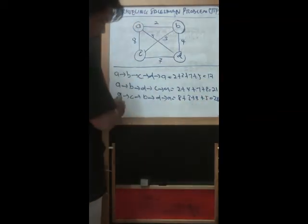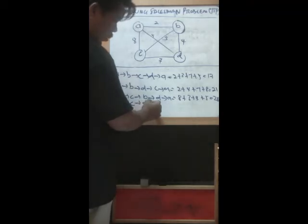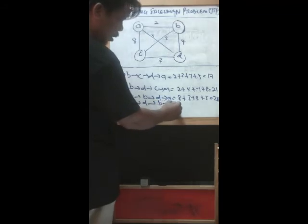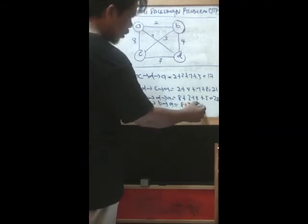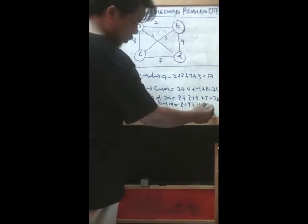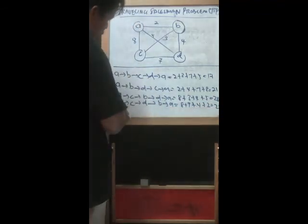Maybe one more is A through C through D through B back to A. The cost would be 8 plus 7 plus 4 plus 2, maybe 21. And so on and so forth.